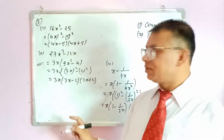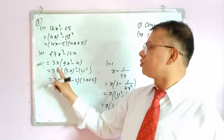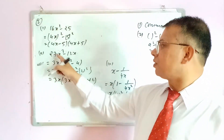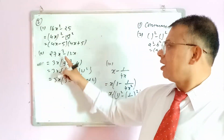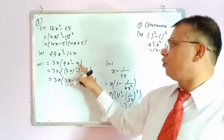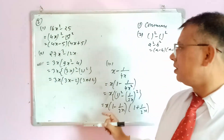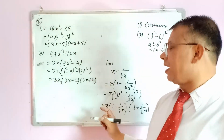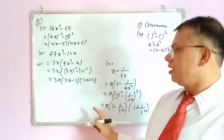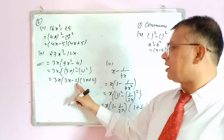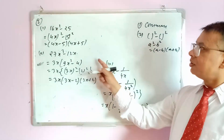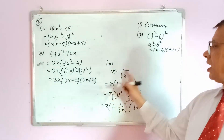Second question using rule 2: 27x³−12x. Here 3x is common. Taking 3x out gives 3x(9x²−4). Now 9x² = (3x)² and 4 = 2², so applying a²−b² formula gives 3x(3x−2)(3x+2).